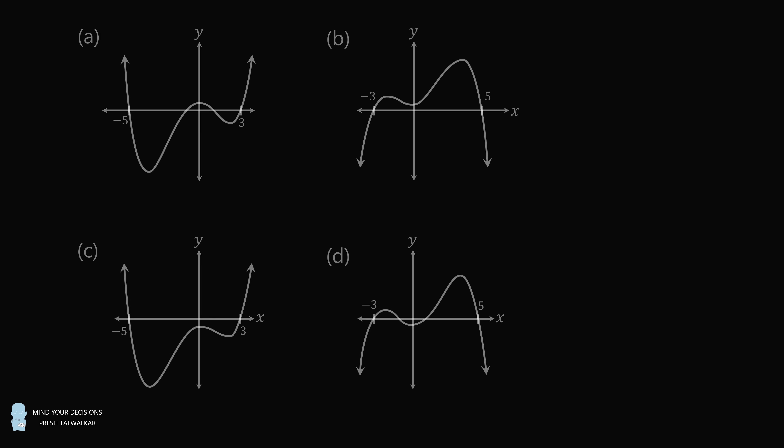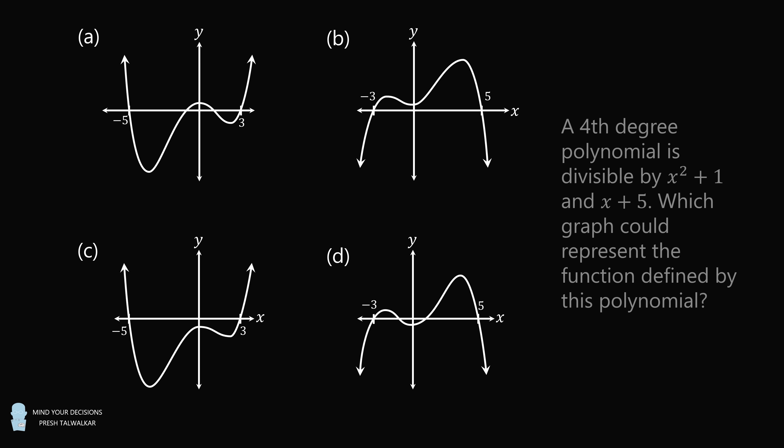Question 3. A fourth-degree polynomial is divisible by x squared plus 1 and x plus 5. Which graph could represent the function defined by this polynomial?